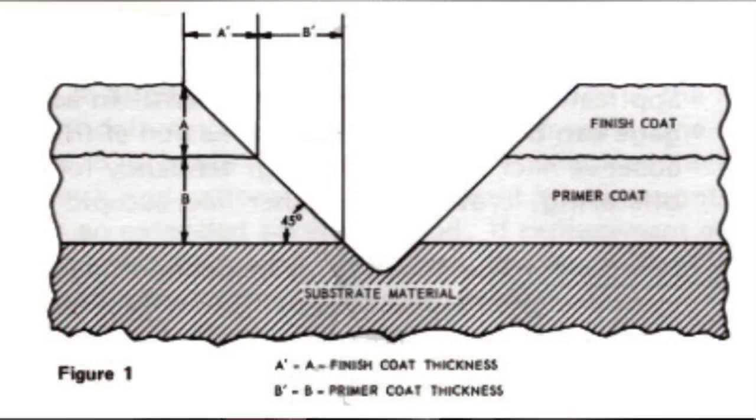The Tooke Gauge measures coating thickness using basic trigonometry. That is, by cutting a precision V groove into the coating system using one of the tips, a right triangle is created.